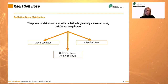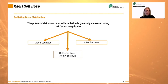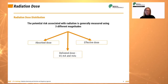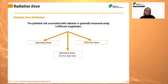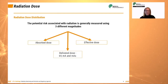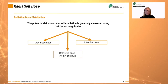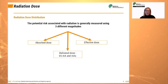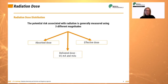From CTDI, the dose length product, or DLP, is calculated, which estimates the total dose delivered over a specific scan length. The average American has a yearly radiation dose of 6.2 millisieverts, evenly divided between natural and man-made sources, which can include medical scans like x-rays or CT scans. If you don't undergo any medical imaging tests, your dose is around 3 millisieverts per year.